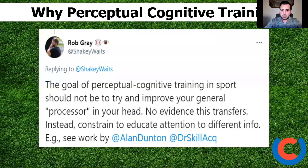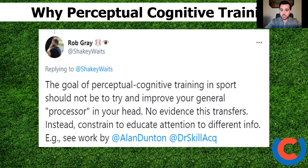To sum up why we use perceptual cognitive training, Rob Gray put it very well: the goal of perceptual cognitive training in sports shouldn't be to try and improve your general processor, because there's no evidence that this transfers — and there are a lot of devices out there that focus on that. Instead, we want to constrain to educate attention to different information sources. That's something the chin-up goggles, if used correctly, do very, very well.